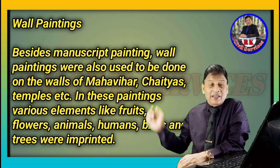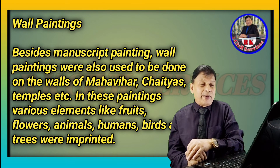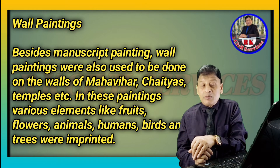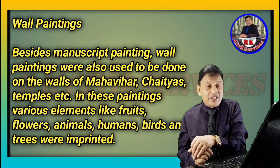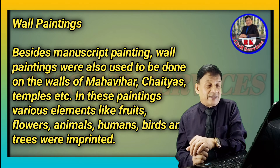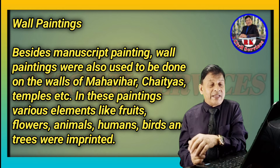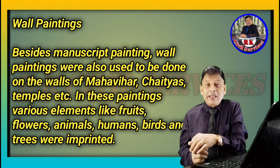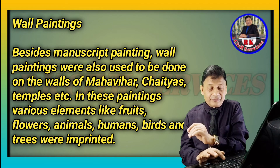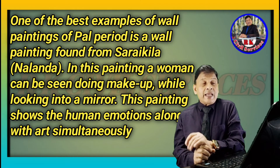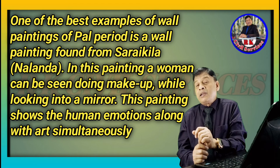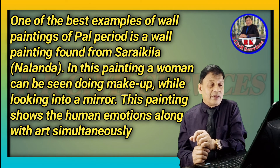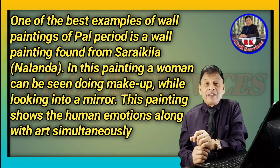Besides manuscript paintings, wall paintings were also done on the walls of Mahaviyaras, Chaityas, temples, etc. In these paintings, various elements like fruits, flowers, animals, humans, birds, and trees were depicted. One of the best examples of wall paintings of the Pala Empire is a wall painting found from Shrikela, Nalanda.